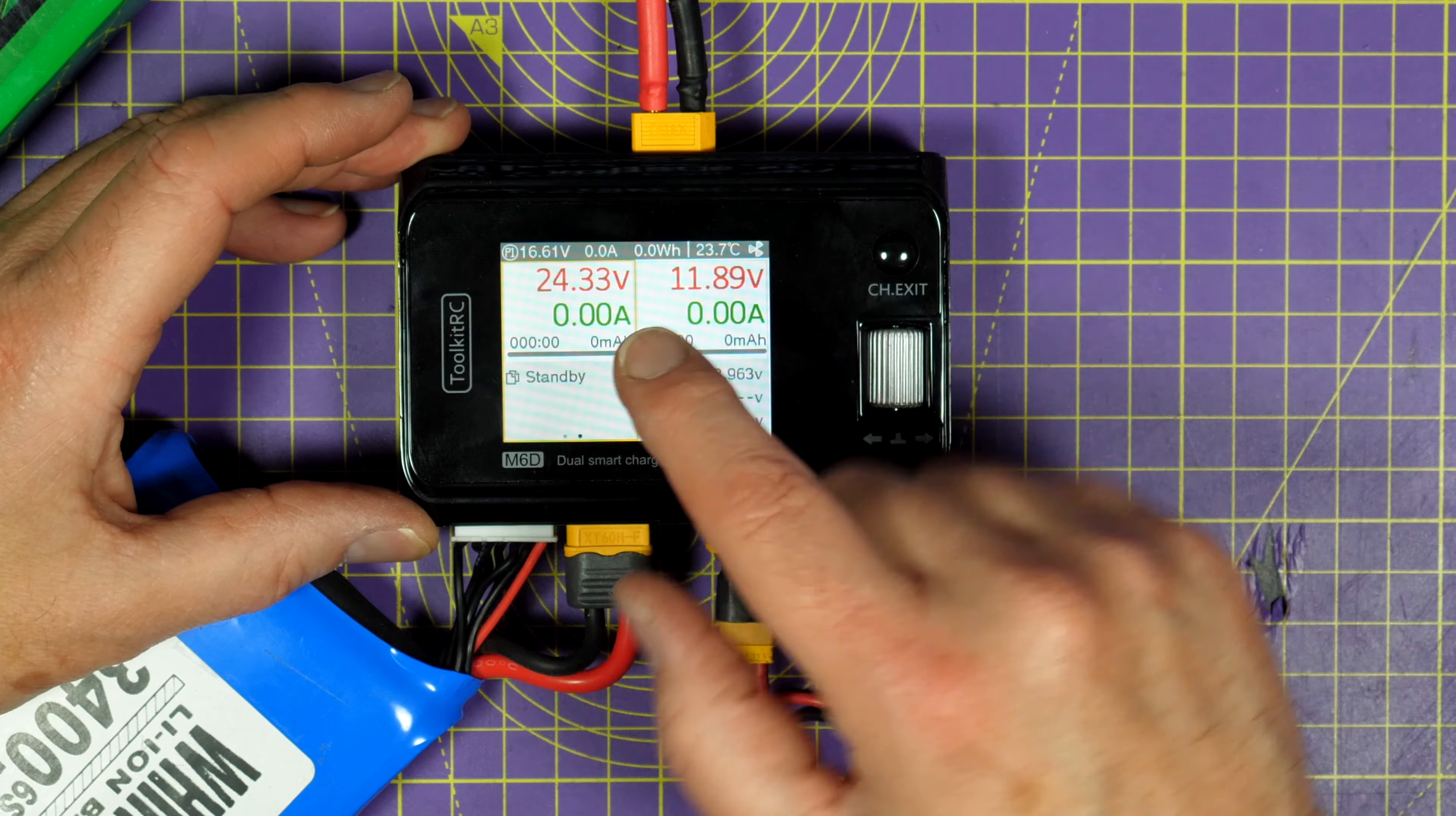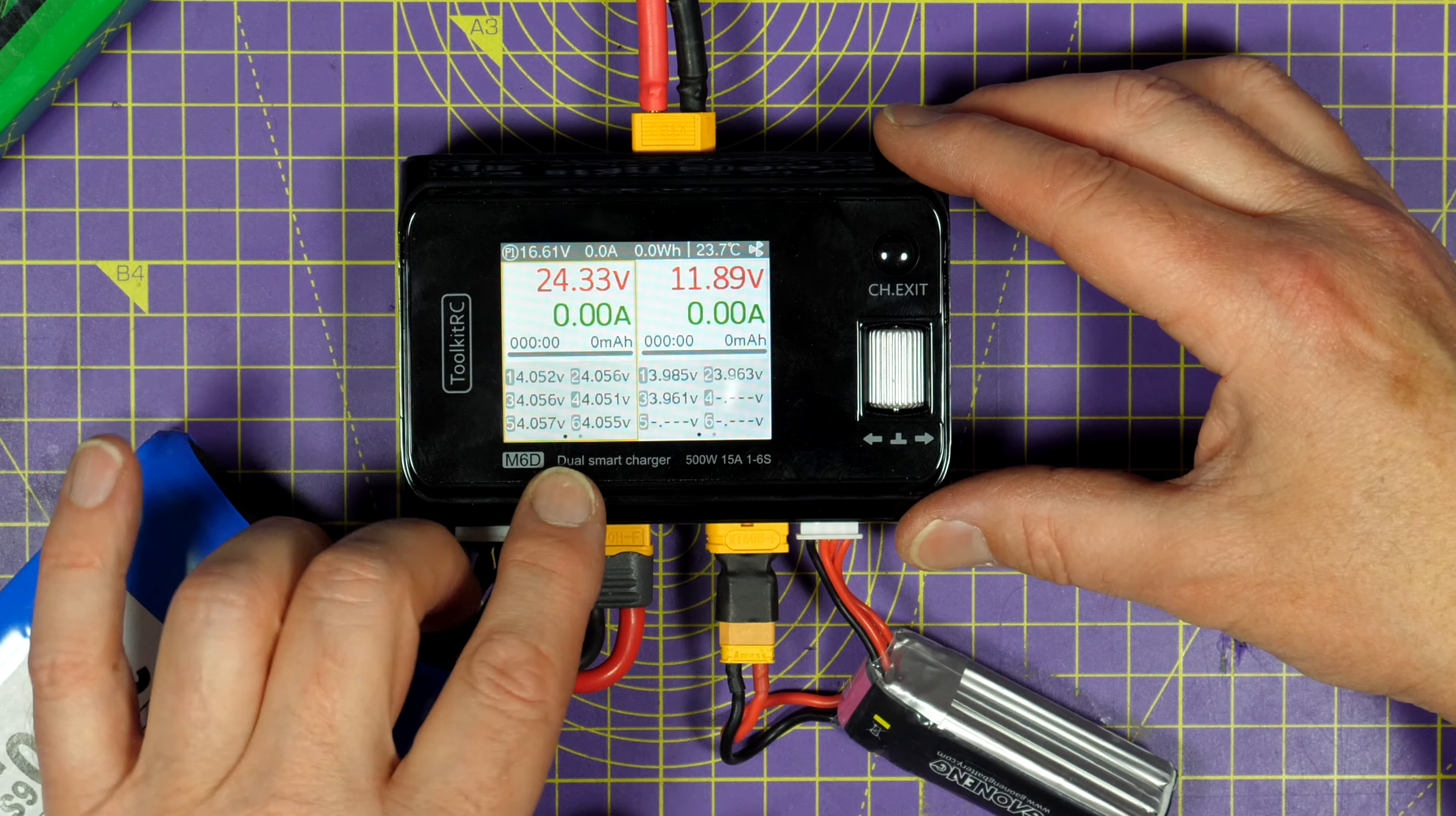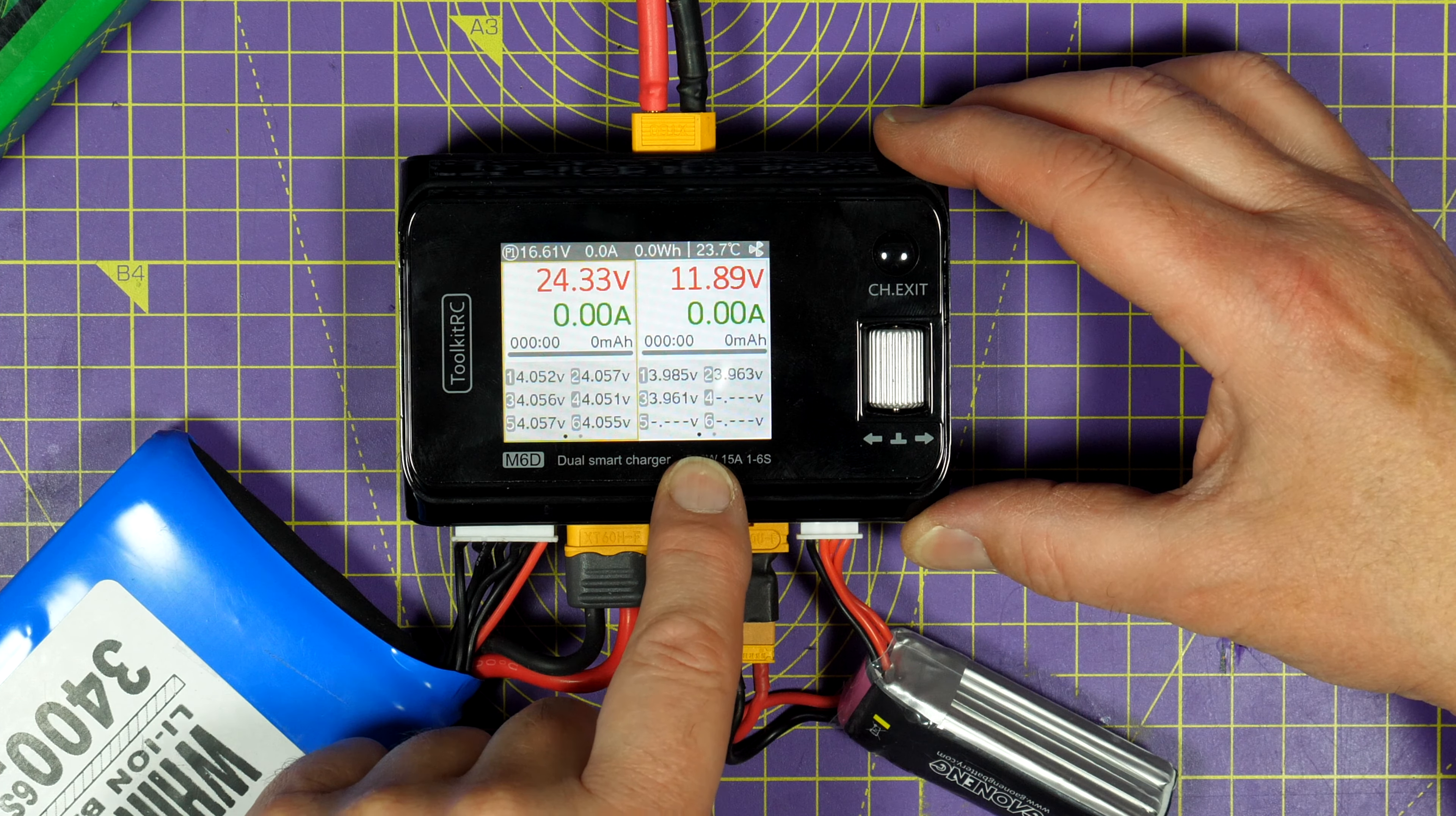Now down here on the display you can easily see the voltage of each cell. So we can see this is 6s and these are approximately 4V each. On this side we've just got just under 4V and there's only 3 cells.